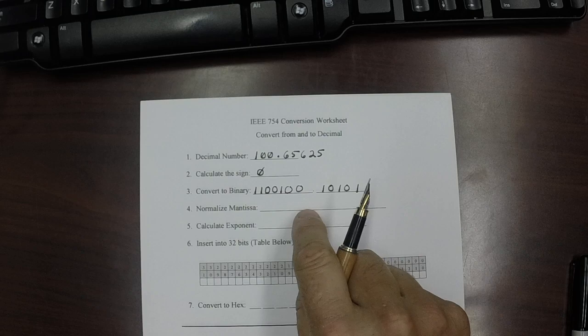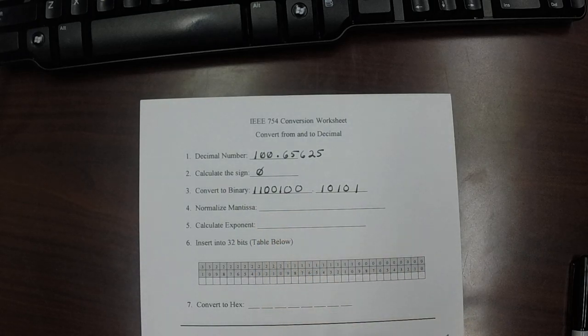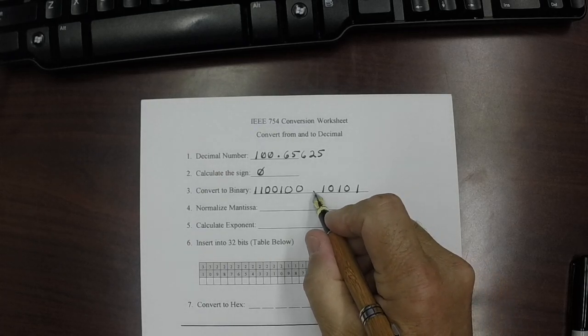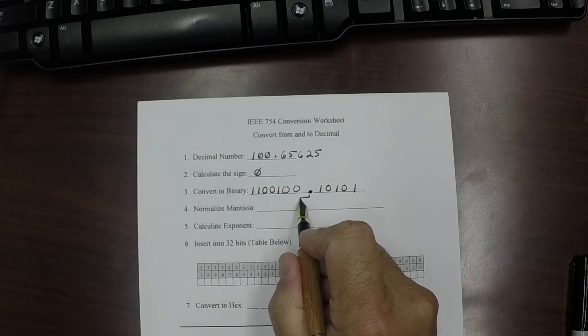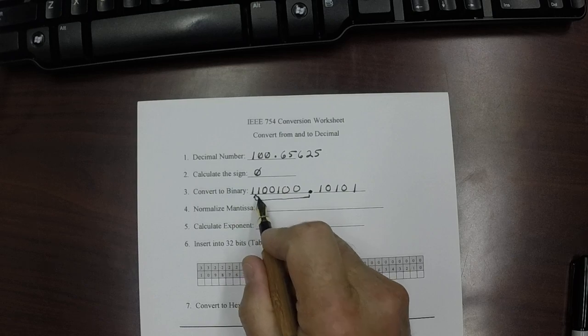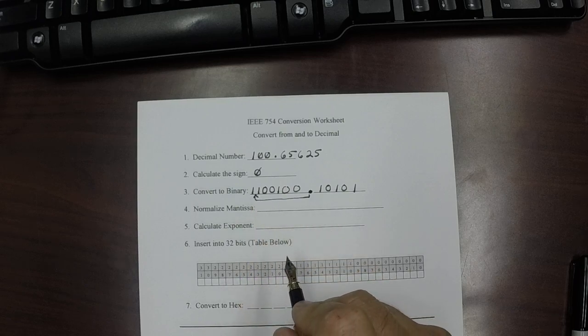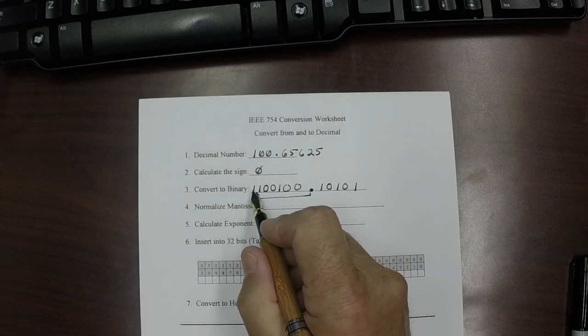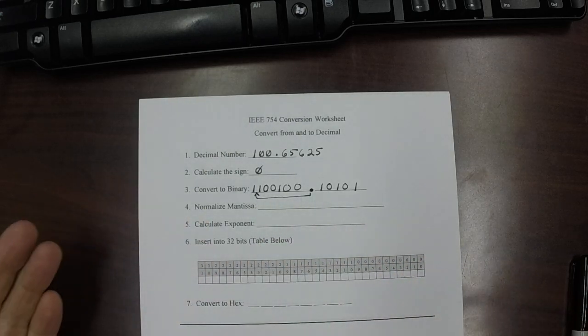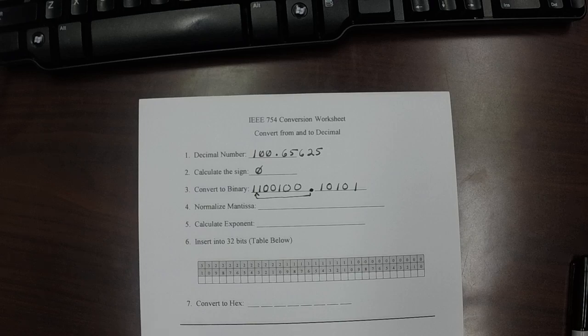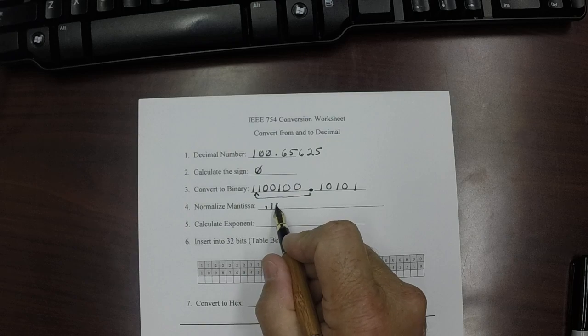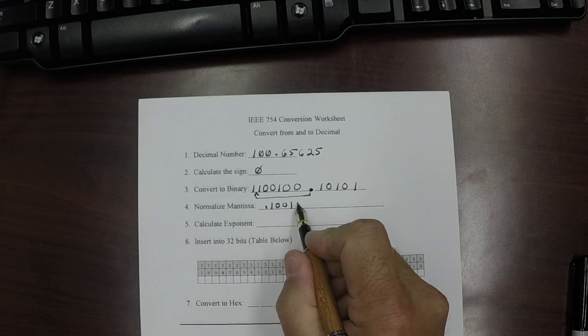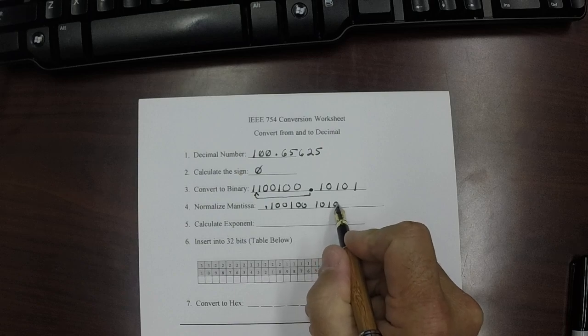Now, the next step is to normalize the mantissa. So, what we want to do is in IEEE floating format, what we do is we take the decimal place, which is right here, and we move it over to where it is just to the right of the leftmost one, and that's called normalization. Because what we're going to do is we're not going to store that one, we're just going to assume it's there, which saves us a bit. It's very important. So, now we're going to normalize the mantissa. So, that is 1, 0, 0, 1, 0, 0, and then 1, 0, 1, 0, 1.